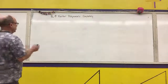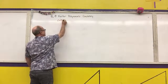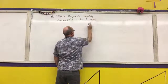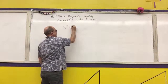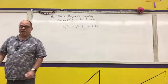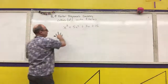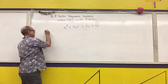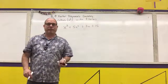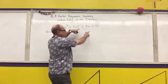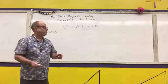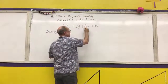The first rule I want to show you is for cubics — polynomials that have an x cubed in them with four terms. An example would be x cubed plus 5x squared plus 3x plus 15. That is a cubic polynomial with four terms, and the way we're going to factor it is by grouping. We put parentheses around the first two terms, parentheses around the last two terms, with a plus sign in between.